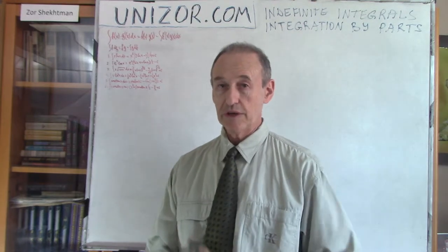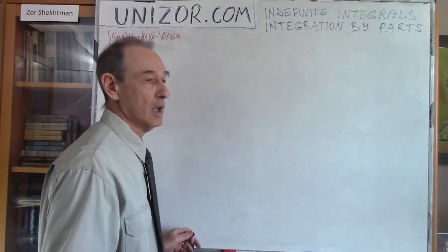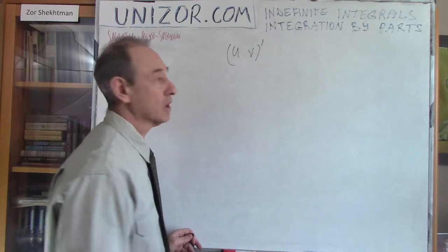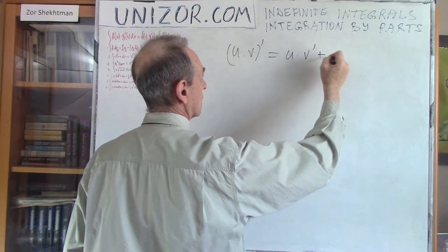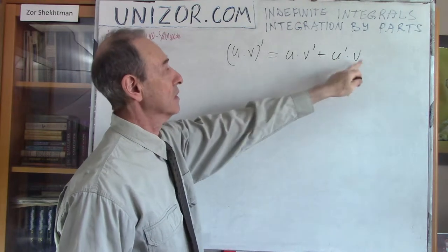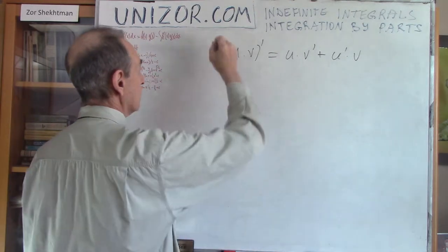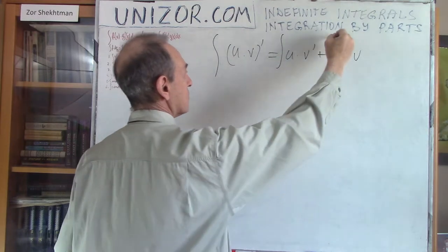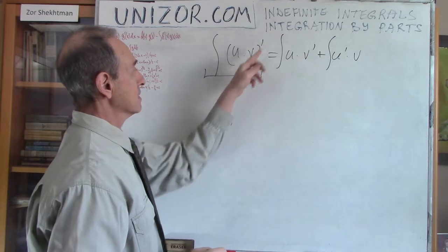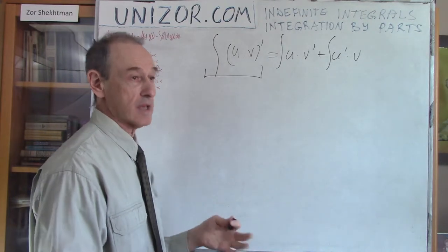The concept of integration by parts is based on the derivative of the product of two functions. If you have two functions and you take the derivative of their product, the rule is: it's the first function times the derivative of the second, plus the derivative of the first times the second. From this, we can integrate — the integral of a sum is the sum of integrals. Differentiation and integration are two opposite operations.